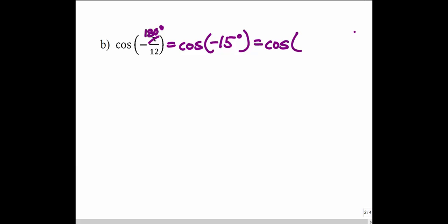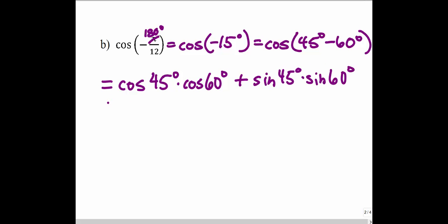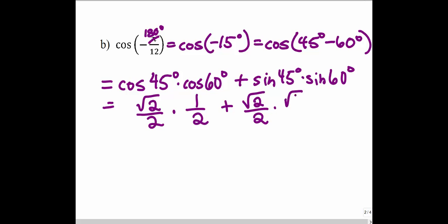We want to think about any two angles that add or subtract to give negative 15 degrees. Let's work with 45 degrees and 60 — so 45 degrees minus 60 degrees. It doesn't matter which two angles you use, any two that add or subtract to give negative 15 degrees. Using our difference identity: cosine of 45 degrees times cosine of 60 degrees, plus sine of 45 degrees times sine of 60 degrees. Cosine of 45 is √2/2 times cosine of 60, which is 1/2, plus sine of 45, which is √2/2, times sine of 60, which is √3/2.